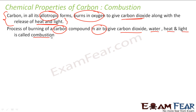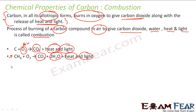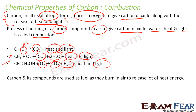Combustion is a process of burning Carbon in the presence of air to give Carbon dioxide, water, heat and light. The formula: Carbon in the presence of oxygen from air gives CO2, heat and light. For example, Methane burned in Oxygen gives Carbon dioxide, water, heat and light. Similarly, Ethanol burned in presence of Oxygen also gives Carbon dioxide, water and heat. These are all examples of Combustion.